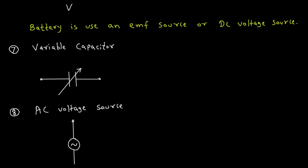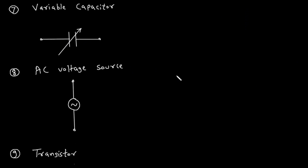Then next is AC voltage source. AC stands for alternating current. Here we can see a symbol of sine wave which represents AC. So this is the symbol for AC voltage source.